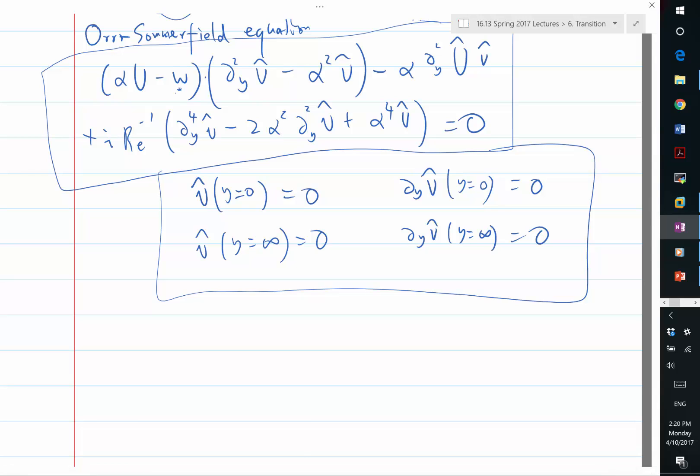If you fix alpha and look for omega, that gives you an eigenvalue problem. If you fix omega and look for alpha, that's something more complex than the eigenvalue problem because you have something proportional to alpha, alpha squared, and alpha fourth. They are no longer linear eigenvalue problems, but still something similar to an eigenvalue problem that can be solved numerically.